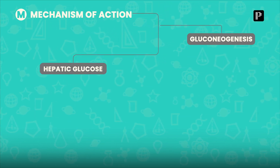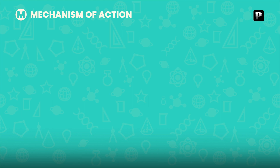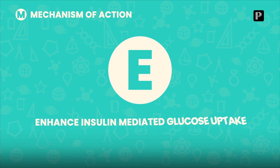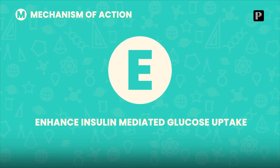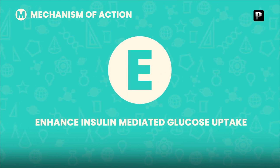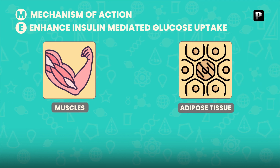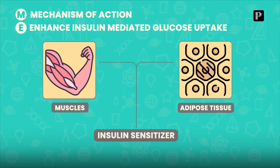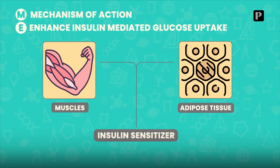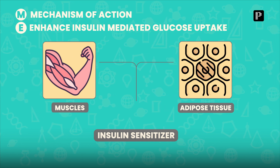Metformin inhibits hepatic glucose output by inhibiting gluconeogenesis. The next letter E stands for 'enhances insulin-mediated glucose uptake,' particularly in the muscle as well as in the adipose tissue. So it is an insulin sensitizer. Remember, it will not increase insulin release — it is an insulin sensitizer.